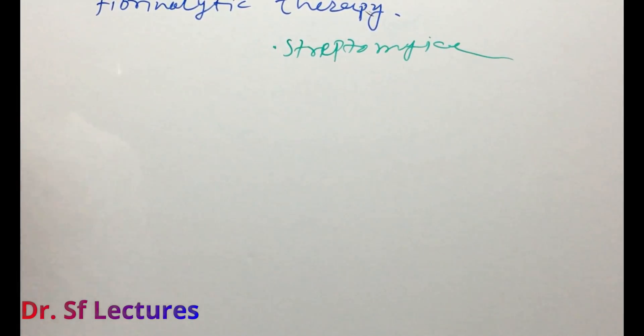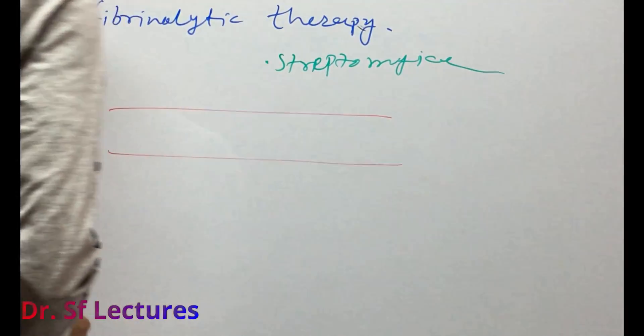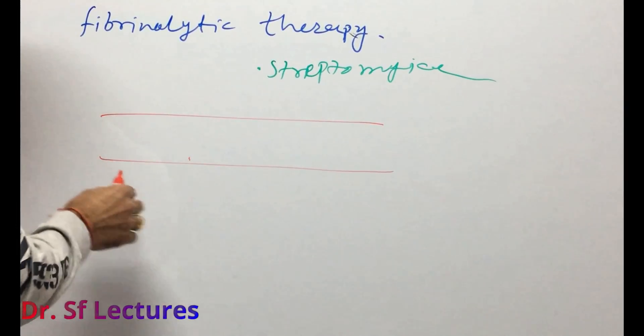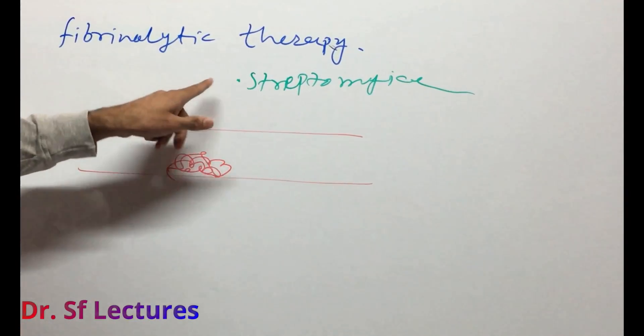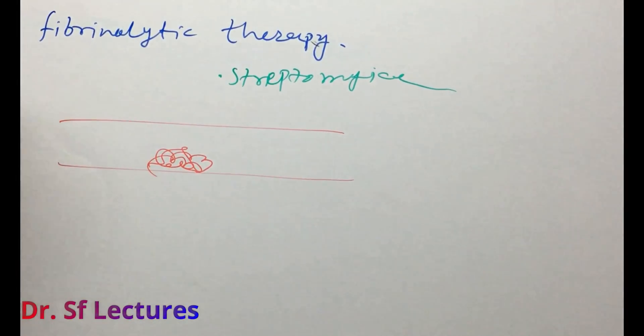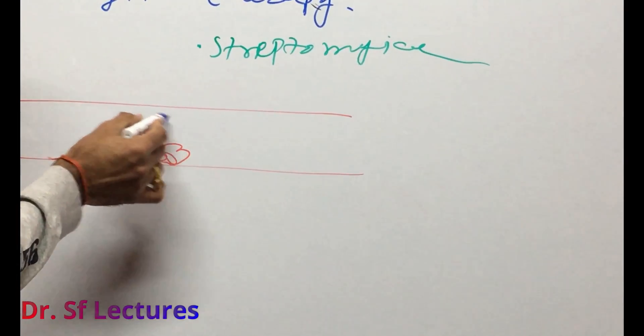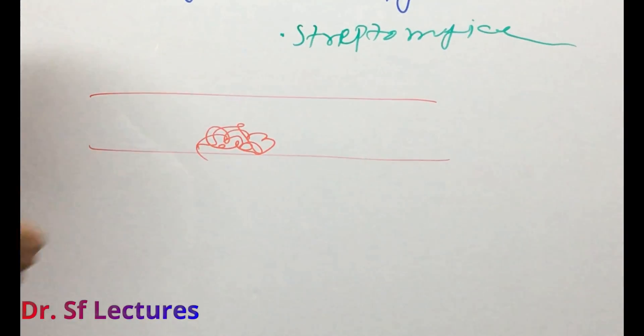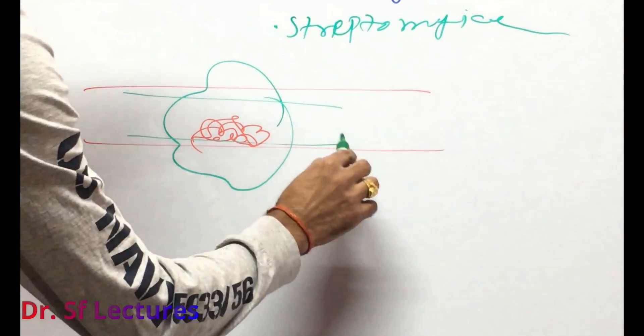Let's understand with an example. This is our coronary artery and here is the blood clot or plaque. If you give fibrinolytic therapy, I mean streptokinase, then streptokinase will help to break down this plaque or blood clot and blood will continue to supply.